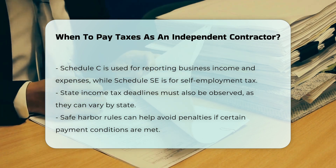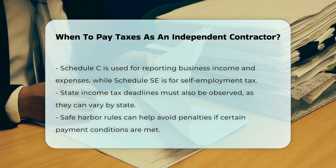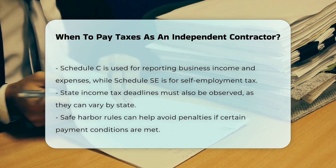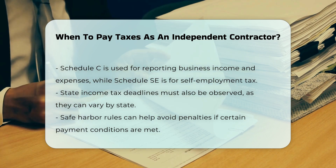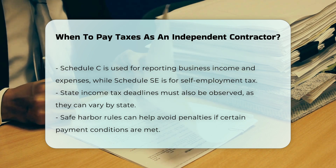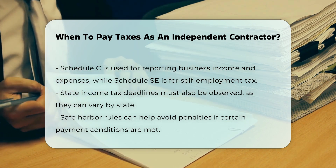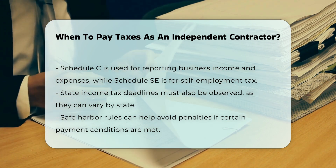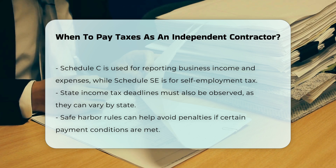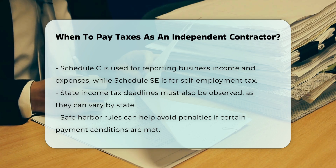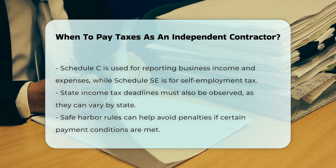Safe Harbor Rule. There are safe harbor rules that allow independent contractors to avoid penalties if they meet certain conditions, such as paying either 90% of the current year's tax or 100% of the prior year's tax — 110% if adjusted gross income is over $150,000.